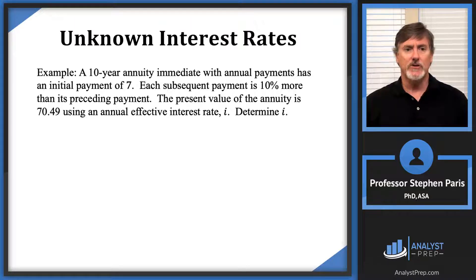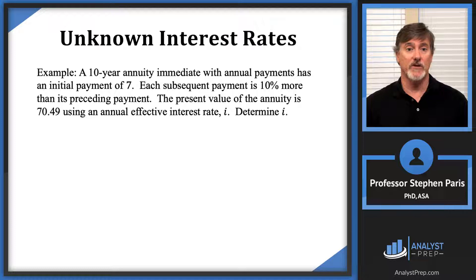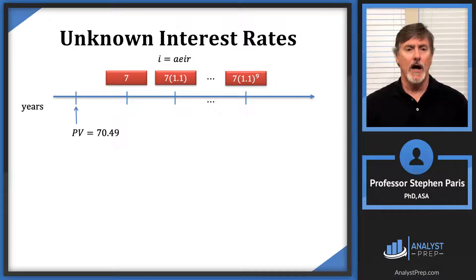Let's get on with this harder example. A 10-year annuity immediate with annual payments has an initial payment of 7; each subsequent payment is 10% more than its preceding payment. The present value of the annuity is 70.49 using an annual effective interest rate of i — determine i. We have a 10-year annuity immediate; as an annuity immediate, the present value is one period before the first payment. I is the annual effective interest rate I seek.